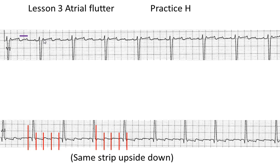If you look at this strip up here, we see regular occurring bumps which honestly look a lot like P waves — kind of little. But if you look at the rate between these bumps, there's about six little boxes between them.